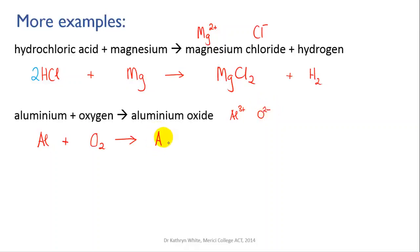When we do the crossover for that, that gives us Al2O3. Okay, let's balance it. On the left we have one aluminum, and on the right we have two aluminiums.